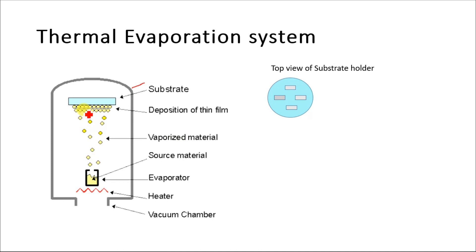A very high vacuum will increase the mean free path for the molecules of the source material and will also reduce the impurities.